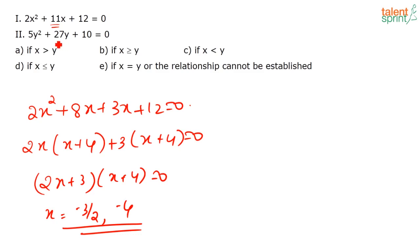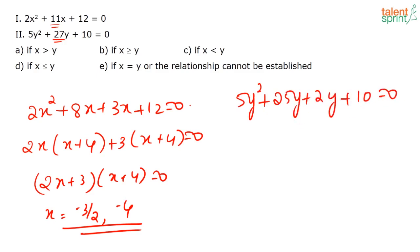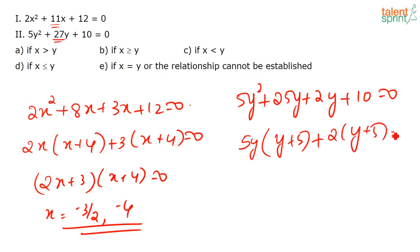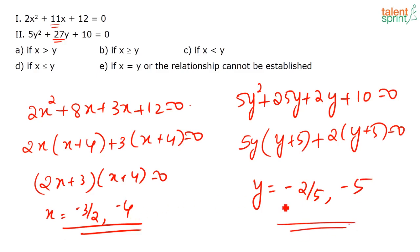For 5y² + 27y + 10 = 0, sum is 27 and product is 50 (5 × 10). Numbers are 25 and 2. Splitting: 5y² + 25y + 2y + 10 = 0. Taking 5y out: 5y(y + 5) + 2(y + 5) = 0, giving (5y + 2)(y + 5) = 0, so y = −2/5 and y = −5. Comparing: when x = −4 and y = −2/5, y > x; when x = −4 and y = −5, x > y. So the relationship cannot be determined — option E.